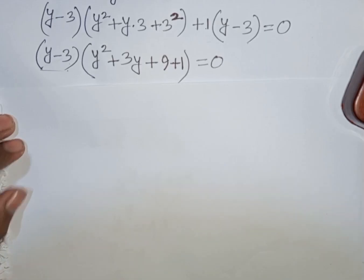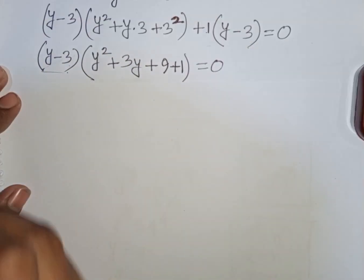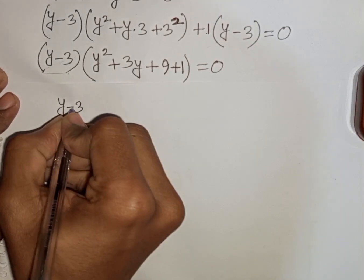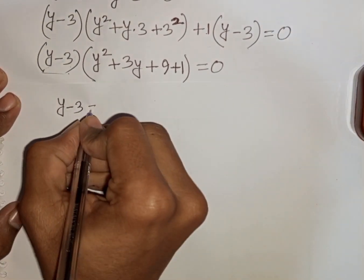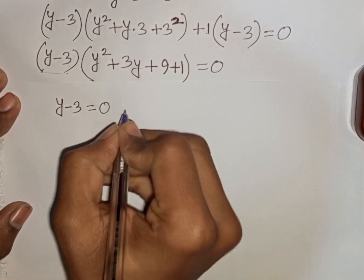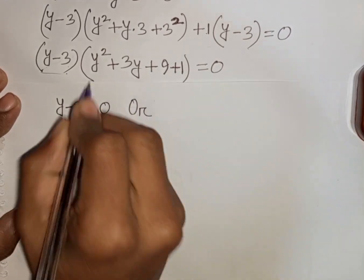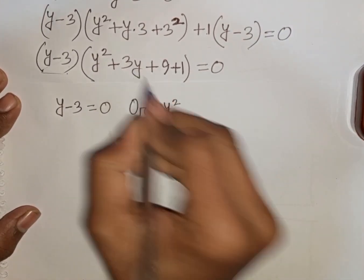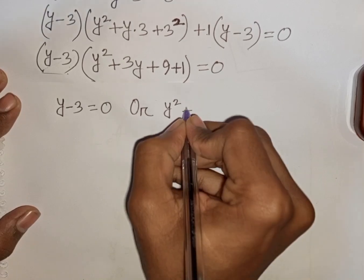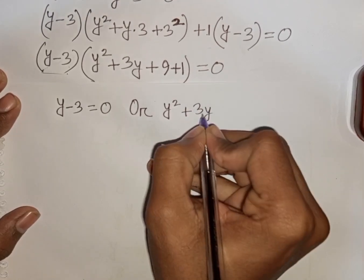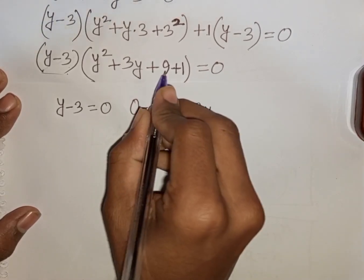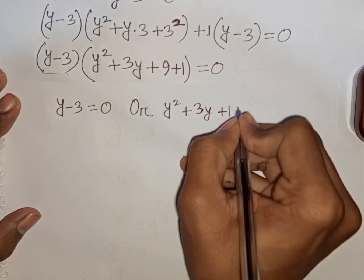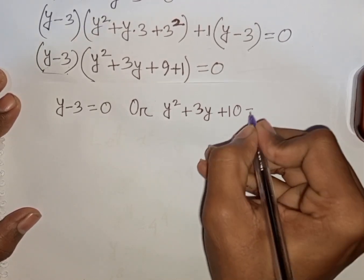Now I can write here: y minus 3 is equal to 0, or y squared plus 3y, then plus 9 plus 1, that means plus 10, then is equal to 0.